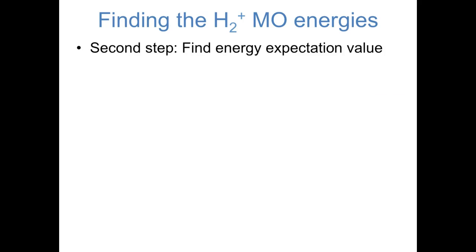Now that we've normalized the molecular orbitals, the next step is to find their energy expectation values. We know that for the true molecular orbital, the energy expectation value—the average that we would get if we measured the energy a large number of times—is just the energy of that orbital. And while the wave functions that we're working with are actually approximations of the true molecular orbitals, they're pretty close. So if we find their energy expectation values, we know we're pretty close to the actual energies of the true molecular orbitals. Again, we're only going to derive this for psi 1. By definition, the energy expectation value of psi 1 is the integral of psi 1 times the Hamiltonian operator applied to psi 1.